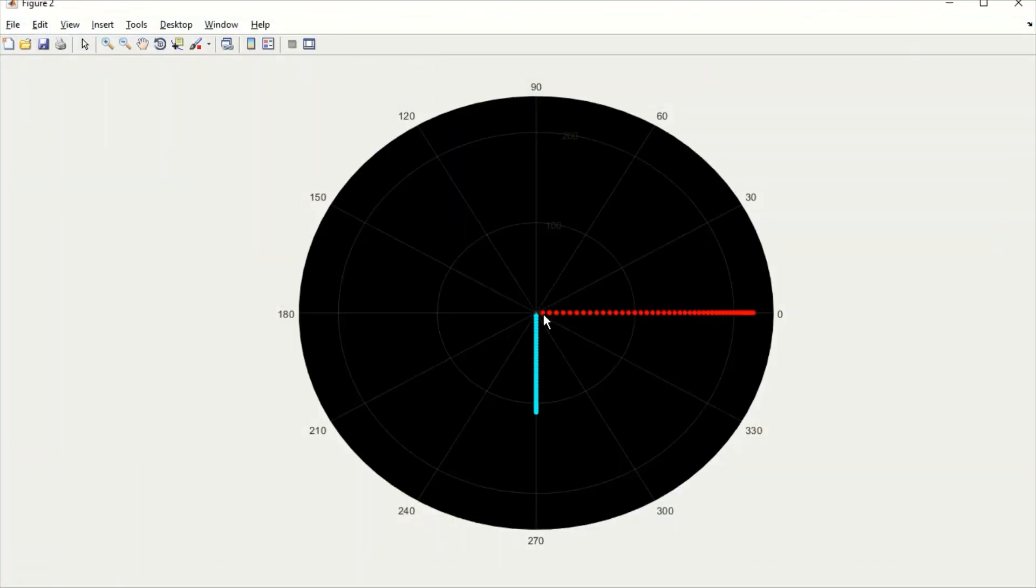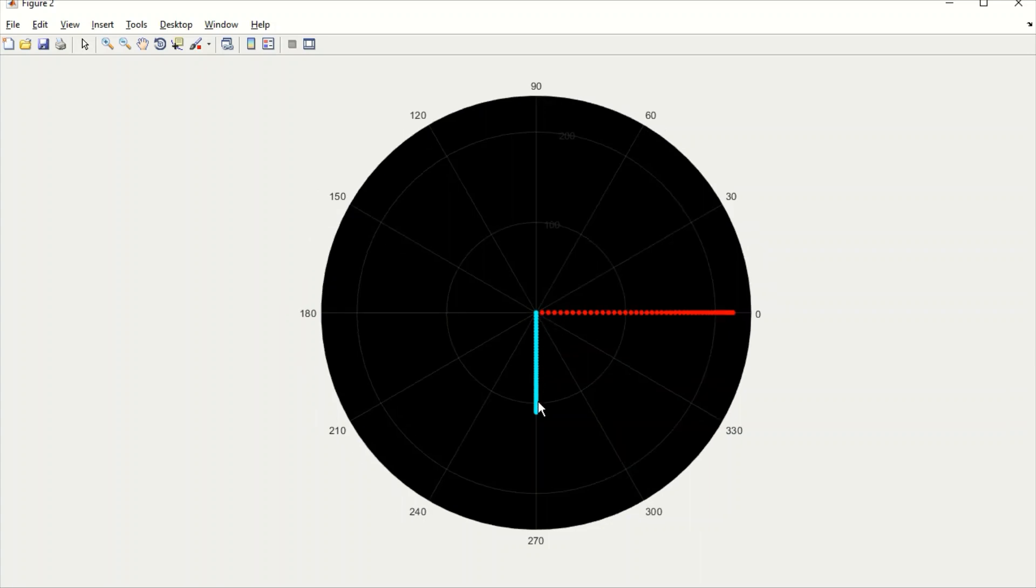Here, instead of 2, if I write 2i, then this is pure inductance. Here, as you can see, voltage is on the real axis and the current is lagging by 90 degrees from the voltage.